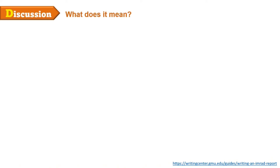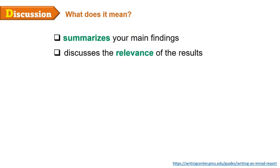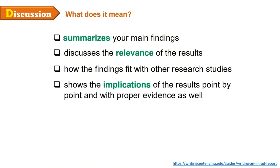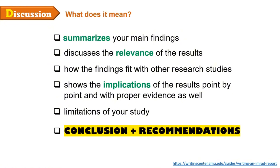Lastly is the discussion, which should answer the question: What does it mean? In this section, you summarize your main findings. This is where you discuss the relevance of the results and how your findings fit with other research studies. You must show the implications of the results point by point and with proper evidence. You also discuss limitations of your study and use these limitations as reasons to suggest additional future research. In the IMRAD format, the conclusion — a summary of the significant findings — is included in the discussion part, as well as the recommendations, which include suggestions directly relevant to your findings.